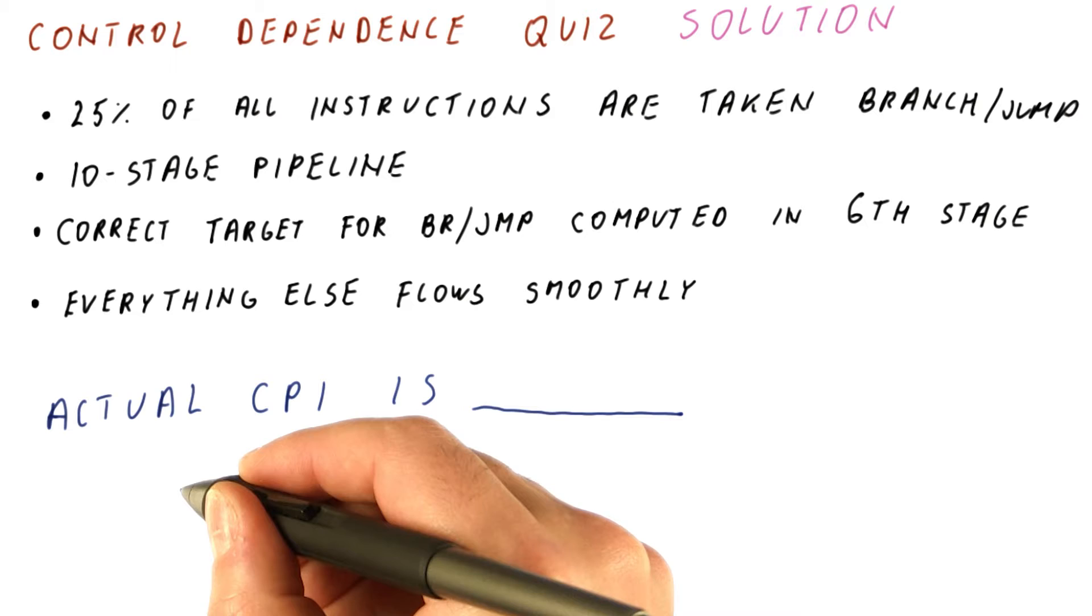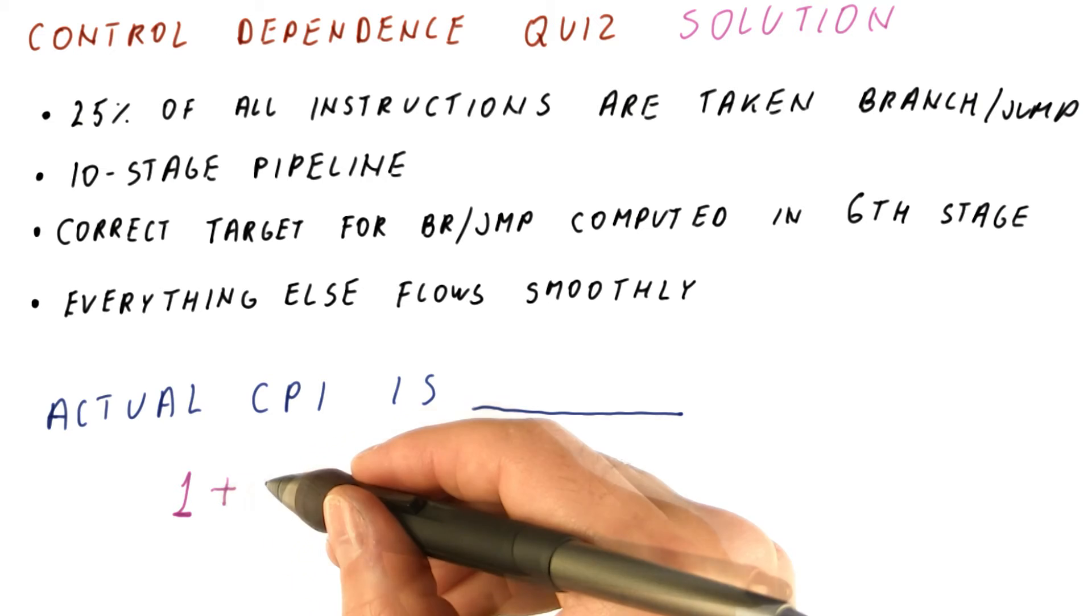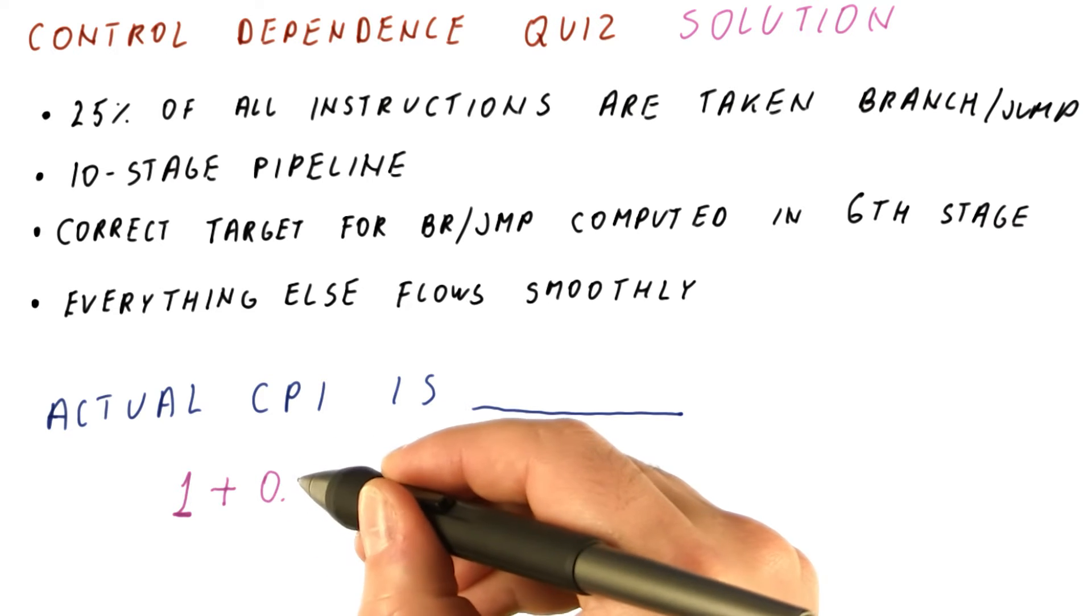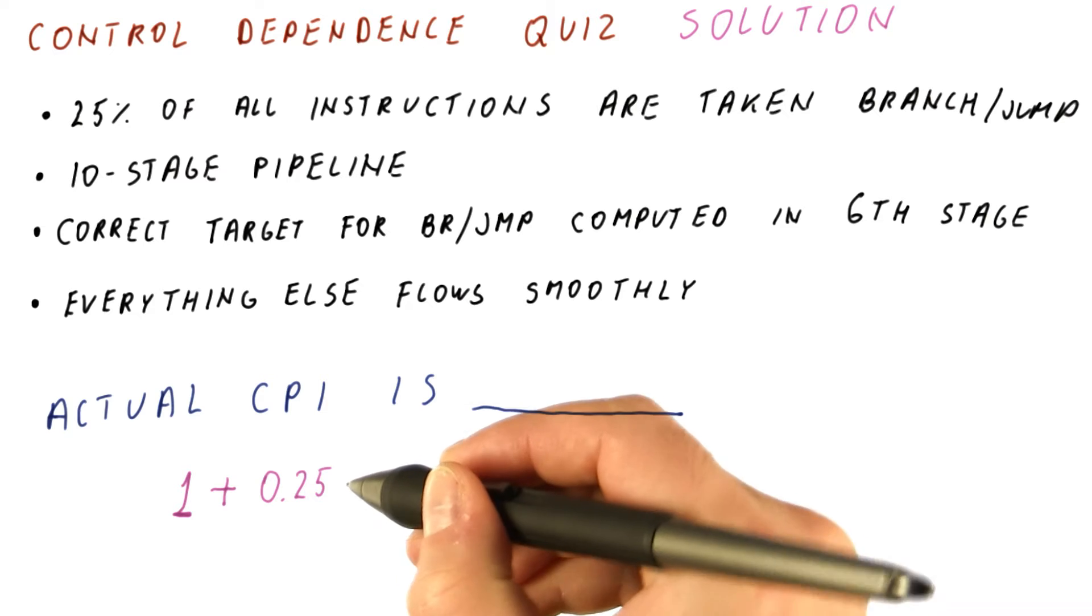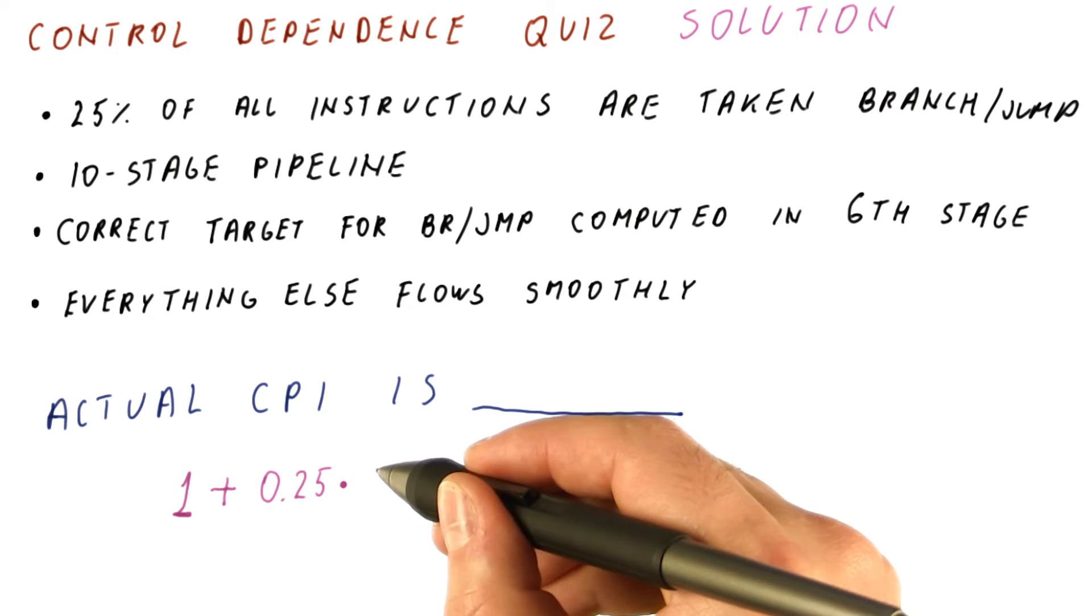So the actual CPI will be one per instruction. This happens for branches and all the other instructions. Plus, for every taken branch, and that happens 25% of the instructions, we have a penalty of five cycles.